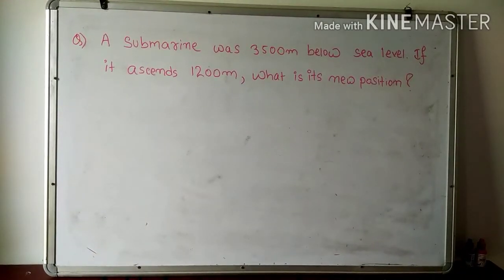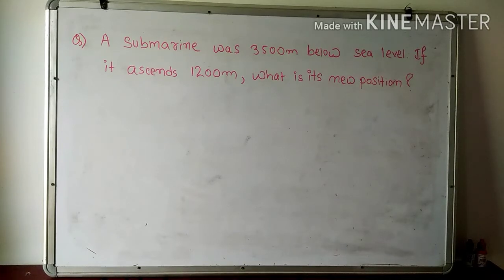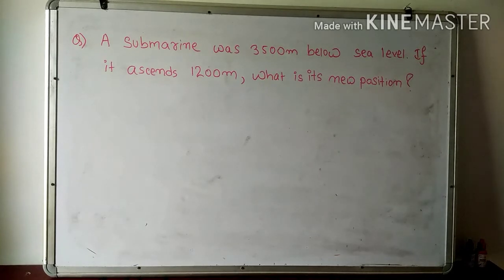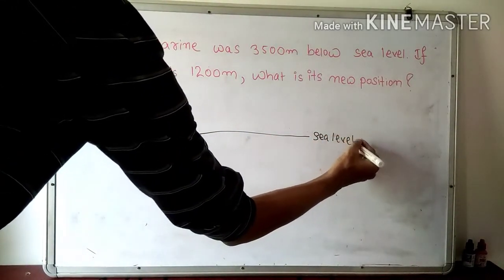We are moving to the next question. A submarine was 3500 meters below sea level. If it ascends 1200 meters, what is its new position? First, understand the sentence properly. Ascending means the number increases from smallest to largest — the submarine moves upward. The process of solving this is as follows: suppose this is your sea level — we take this point as origin.